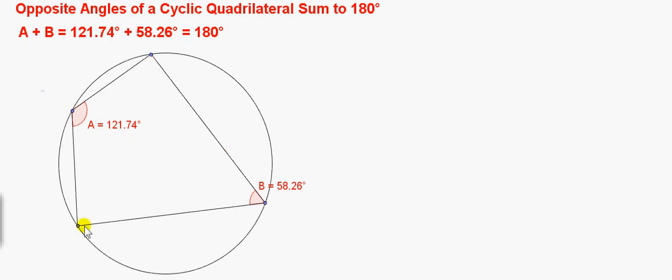Here we have a quadrilateral that is a four-sided figure but it is inscribed in a circle. So this type of quadrilateral is called a cyclic quadrilateral.